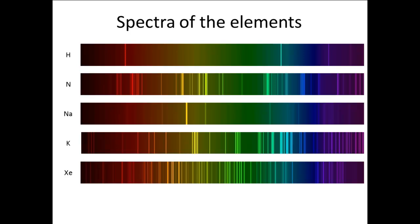The spectra are shown with energy increasing from left to right. That is, the lower energy part of the spectrum, the red end, is on the left, and the higher energy end of the spectrum, the violet end, is on the right.